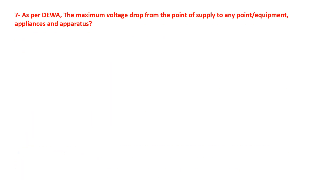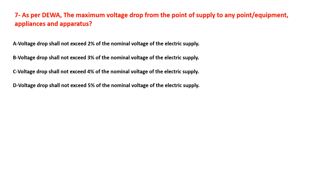Question number seven: as per DEWA, what is the maximum voltage drop from the point of supply to any point of equipment, appliances, or operators? The answers are: two, three, four, or five percent. Select your answer.